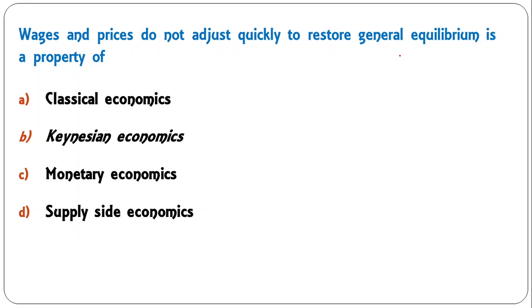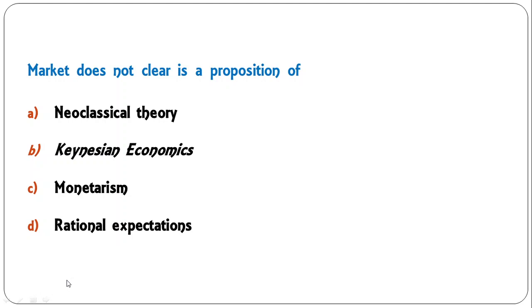Next question: wages and prices do not adjust quickly to restore general equilibrium is a property of classical economics, Keynesian economics, monetary economics, or supply side economics? This was suggested by Keynesian economics — wages and prices are more sticky and do not adjust quickly to restore general equilibrium. B is the correct answer.